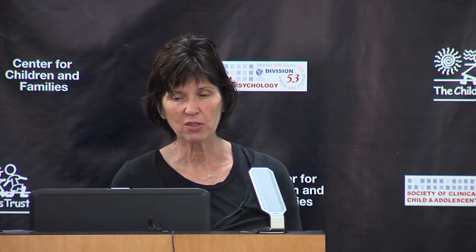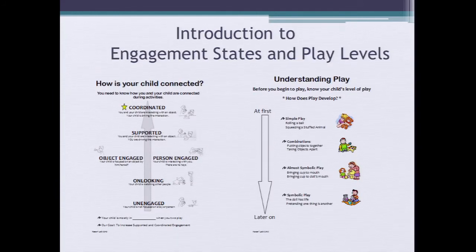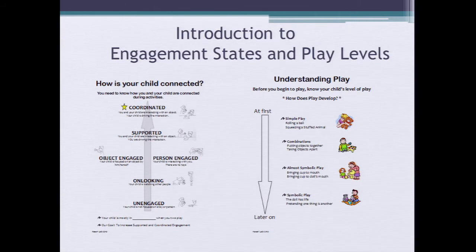The weekly parent modules, which are in your book, start off with engagement states and play levels. We're basically giving them feedback on where their kid is developmentally. We would talk about the engagement states, make sure they understand where their child is mostly playing — whether their child is mostly object engaged, whether their child is in a supported joint engagement state already — and we would talk about how we want to get to coordinated joint engagement, but also pinpoint where we're starting with that child. Then we would talk about where their child is in terms of play level.